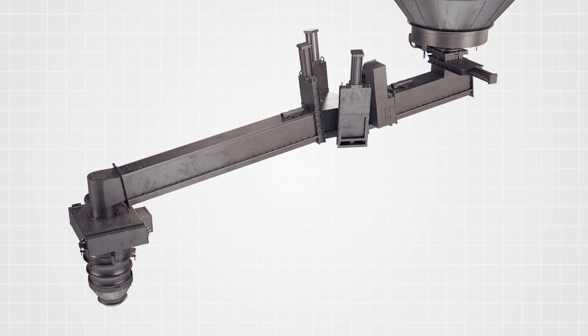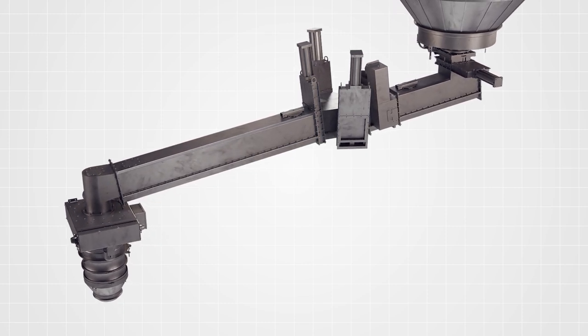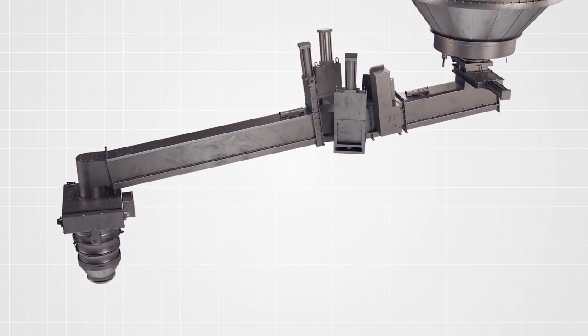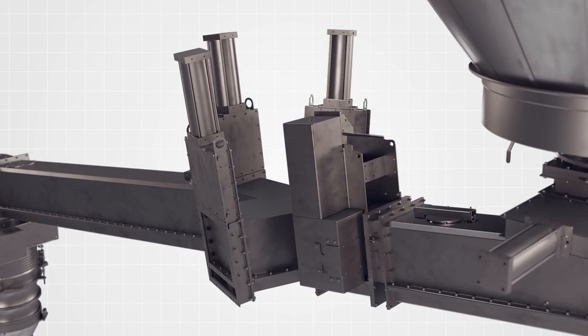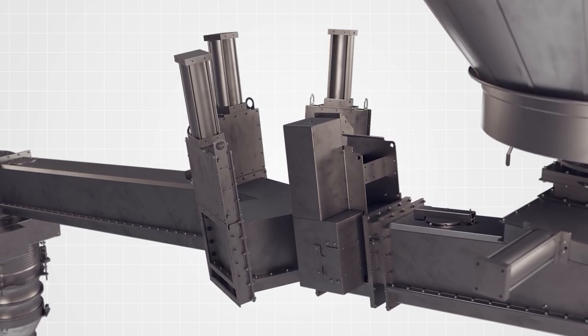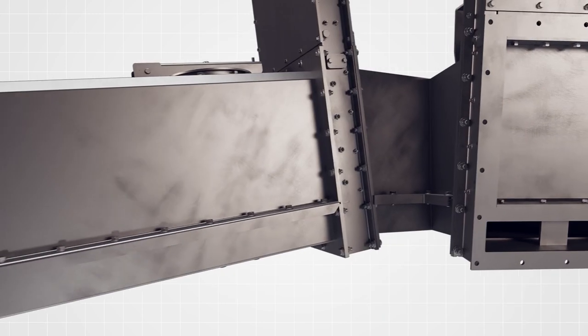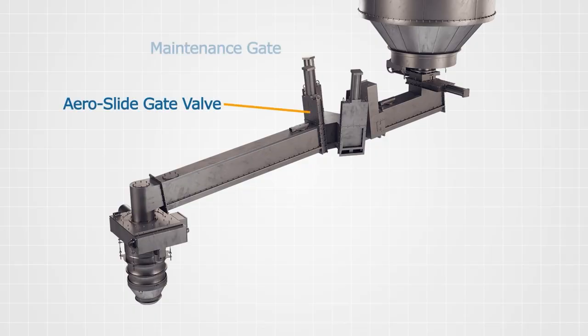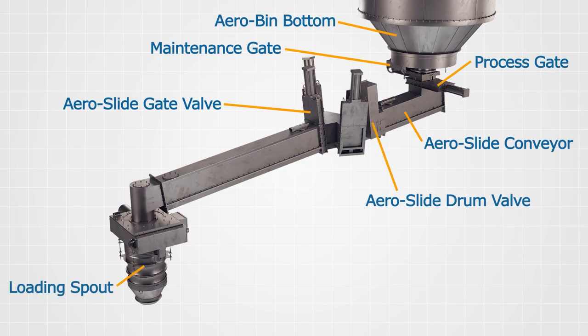Available in standard and custom configurations, the Vortex loading spout and aerated conveying system is the ideal solution for moving and loading fine materials like cement powder from one destination to another whilst capturing fugitive dusts, preventing material waste, and ensuring plant and environmental safety. Consult a Vortex application engineer today for all your loading needs.